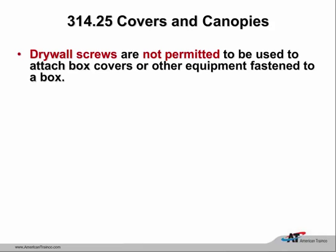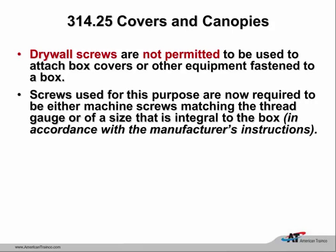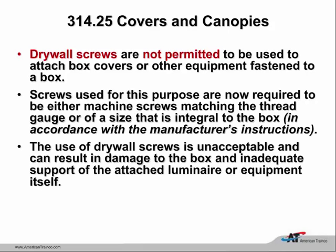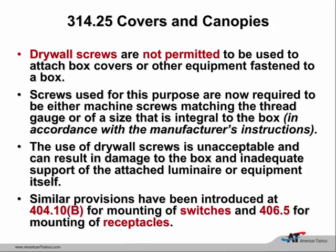Regarding covers and canopies, drywall screws: they're handy and you can do a lot of things with a drywall screw, but understand they can't support any weight over 35 pounds. The technical committee has now said drywall screws are not permitted to attach a cover or a device. We must use the 6-32 screw for devices and 8-32 for covers—the correct machine thread. Looking at the next slide showing a single-pole switch with a sheetrock screw holding it in a plastic box: the code book has definitively prohibited that.